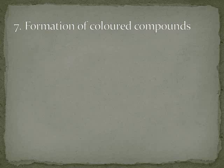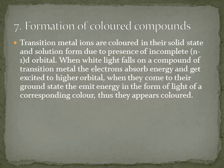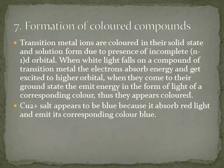Transition metal ions ke paas incomplete d-orbital hota hai. Jab white light transition metals ke upar girti hai, to electrons ek khaas wavelength ki energy absorb kar lete hain, aur jab excited hokar higher orbital par jaate hain, uske baad jab ground state par wapas aate hain, to wahi light emit karte hain. Jo color absorb ki thi uska corresponding complementary color emit hota hai, isliye ye colorful dikhte hain. Copper (2+) salt blue color ke dikhte hain kyunki red color absorb karte hain aur blue color emit hota hai.